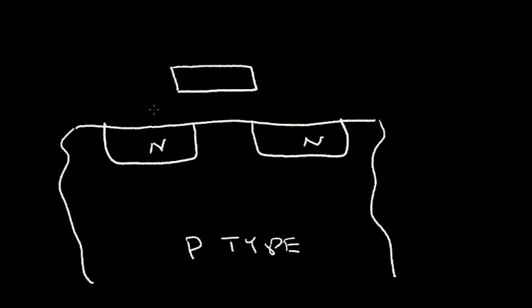So if we put a voltage, positive voltage, on this gate electrode relative to these N regions. So if I have a voltmeter between this N region and this gate, I measure a voltage. Perhaps it's one volt or two volts or four volts.